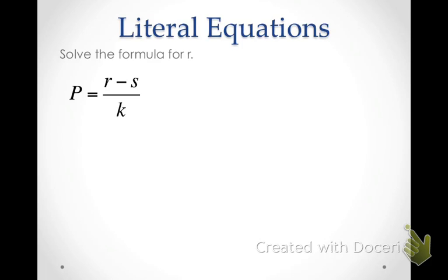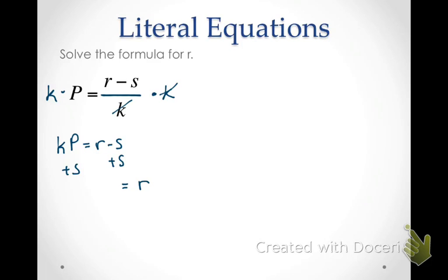In this next one we're going to solve for r. You're going to see this form a lot in literal equations and in solving regular equations. Normally you'd add and subtract first, then multiply or divide — but in this case, since the division is over everything, we're going to move the k first by multiplying both sides by k. That cancels the k on the right side, and then we add the s over. On the right we're left with just r. On the left we have kp plus s, so the answer is kp plus s. These will be left in a longer form since they don't simplify or condense very well.